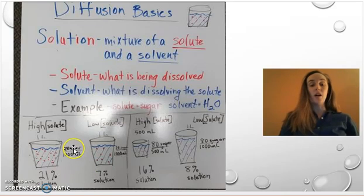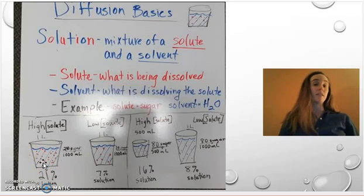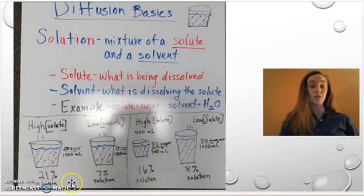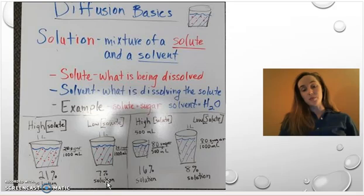Because there's a higher amount of solute in this amount of solvent, you're going to have a higher value. This is a 21% solution, whereas this one is only a 7% solution.